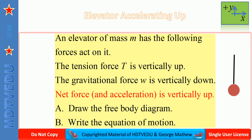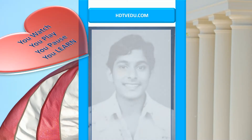An elevator of mass m has the following forces acting on it: the tension force T is vertically up, the gravitational force W is vertically down, and the net force and acceleration are vertically up. Draw the free body diagram and write the equation of motion. Welcome to hdtvedu.com — direct and simple education in seconds.